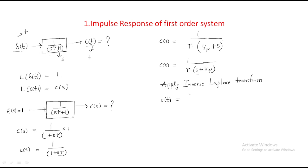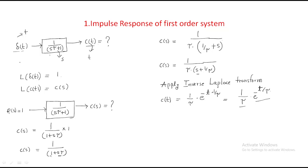By applying the inverse Laplace transform, C(s) becomes c(t). The constant (1/τ) remains, and we get e to the power of minus t divided by τ. So finally, the output is c(t) = (1/τ) × e^(−t/τ). This is the impulse response — the output when an impulse input is given to the system.